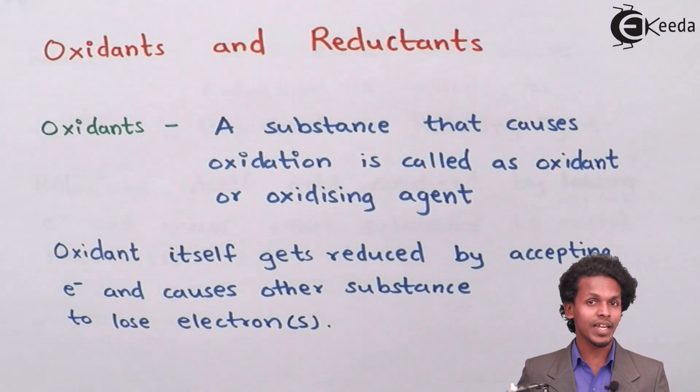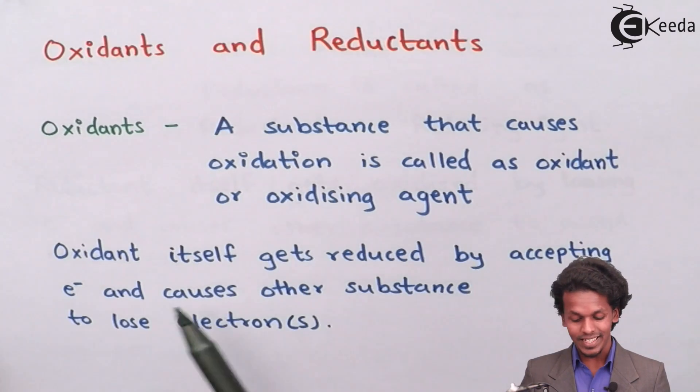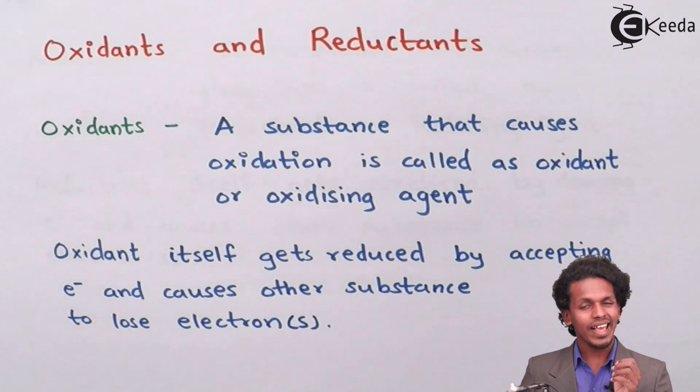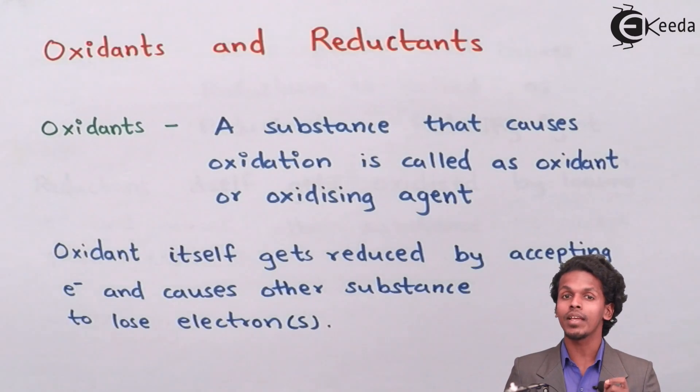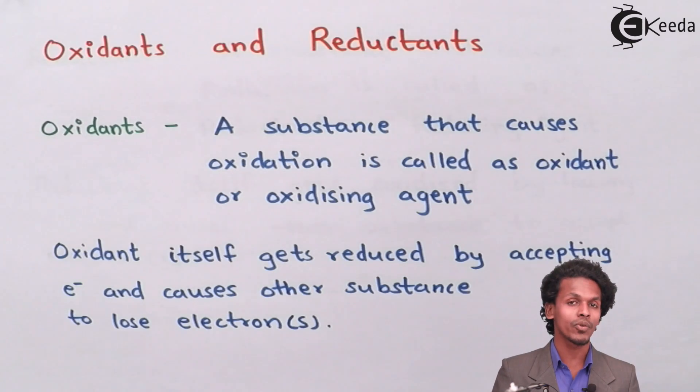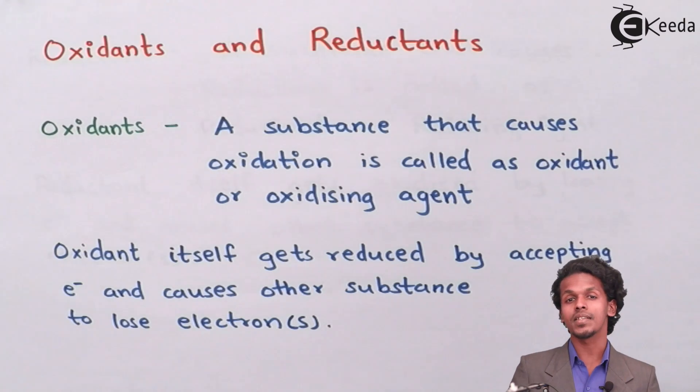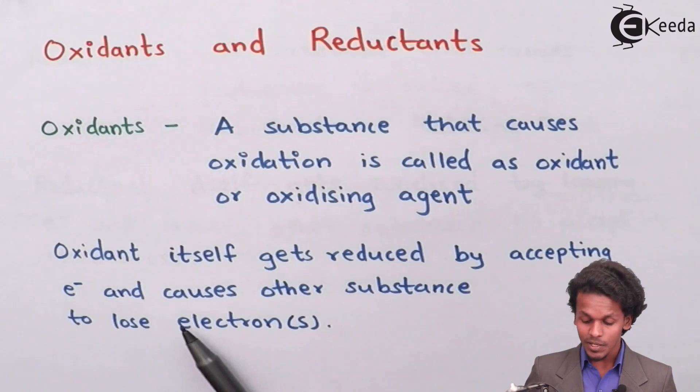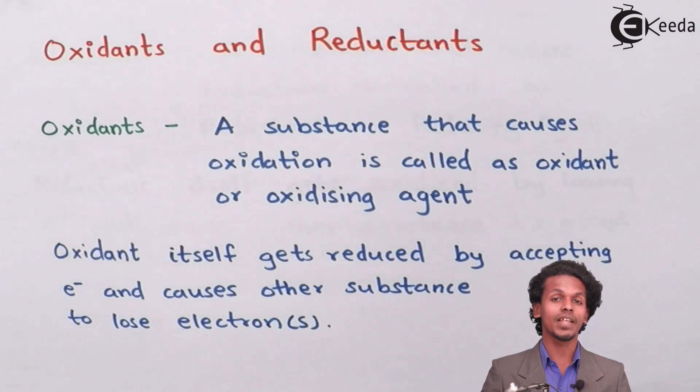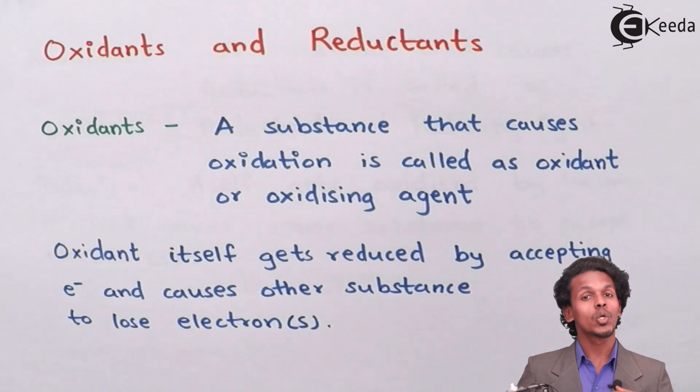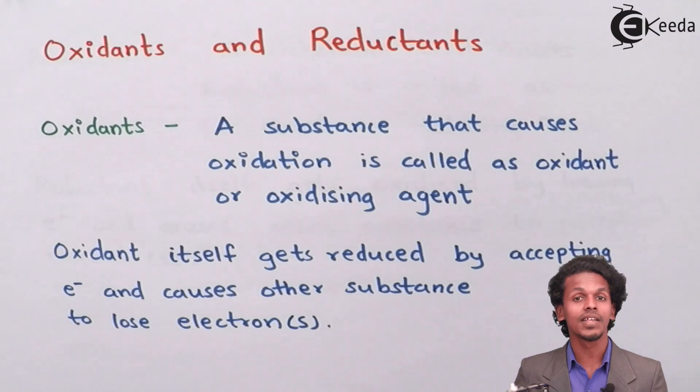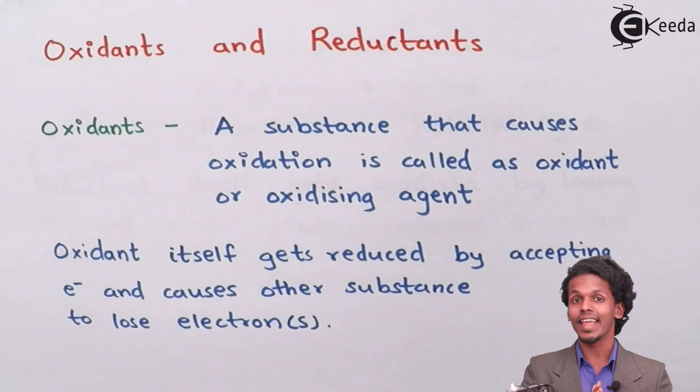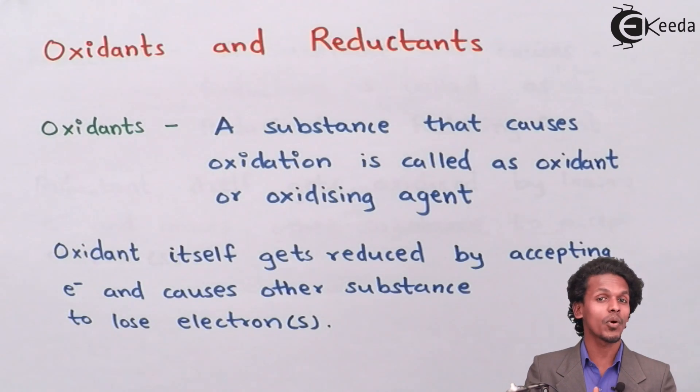Another definition: an oxidant itself gets reduced by accepting electron. In the last lecture we have studied, the one who accepts electron is doing the reduction process. So oxidants are the molecules or atoms or substances that undergo reduction process and cause the other substance to lose electron. Therefore, these are the substances which help the other substance to lose their electron and oxidants take their electron towards themselves. So oxidants are behaving like a reduction process.